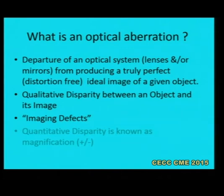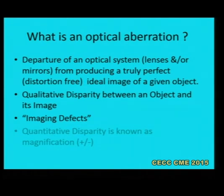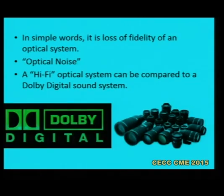Now, what is an optical aberration? An optical aberration is a departure of an optical system comprising lenses or mirrors from producing a truly perfect, distortion-free, ideal image of a given object. We can consider it as a qualitative disparity between an object and its image. In simple words, it is loss of fidelity of an optical system — optical noise — comparable to a hi-fi optical system.